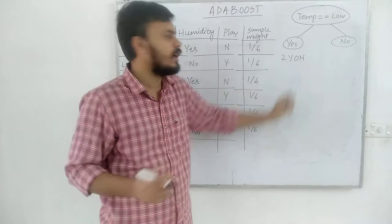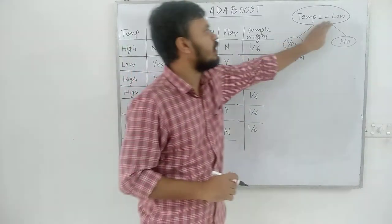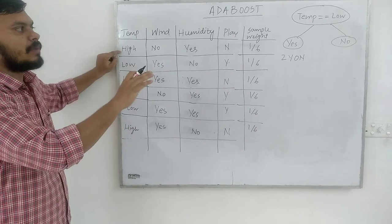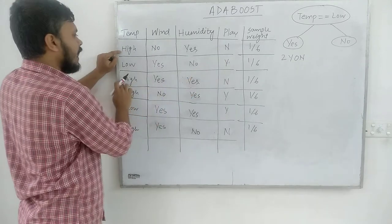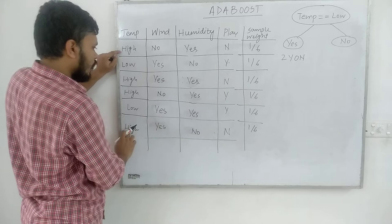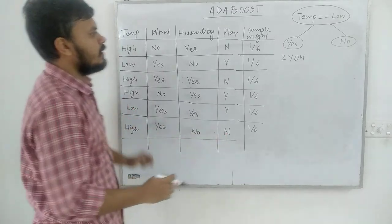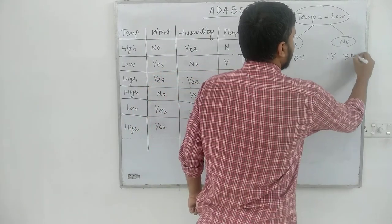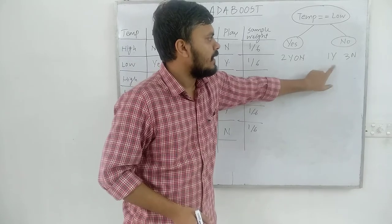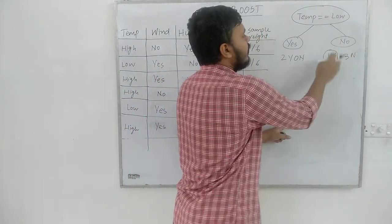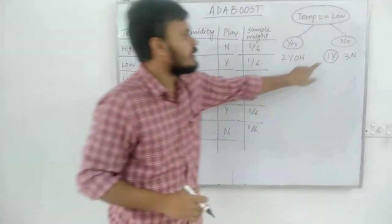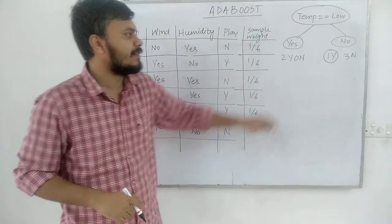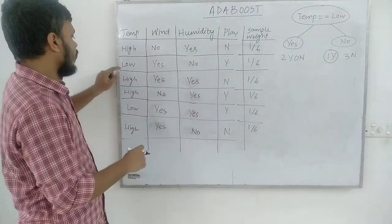Now let's talk about the high values. Temperature equals low being no means temperature is high. Looking at those four points: one no, another no, one yes, and one no. So there is one yes and three no's. This means my weak learner has one incorrectly classified point — the one that was yes in the training data but got predicted as no.